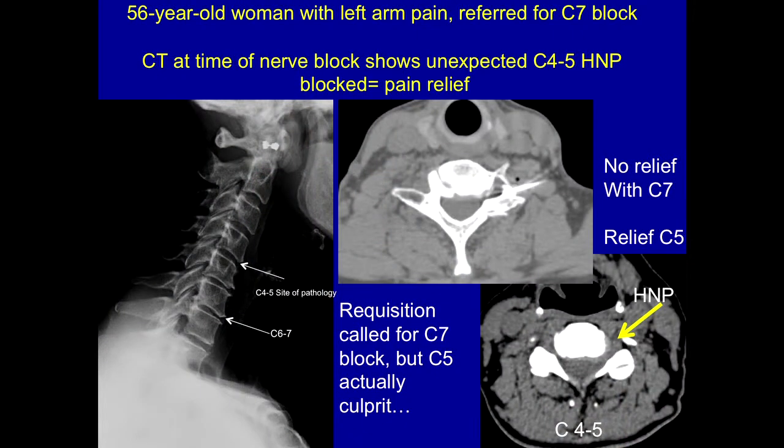Sometimes patients come in just saying 'my back hurts' or 'my leg hurts,' and the clinician is forced to decide where to inject. Here's an example of a person who had arm and neck pain. They looked at the plain films and said, 'Let's do an injection at C6-7 because that's the degenerative disc on the plain film.'